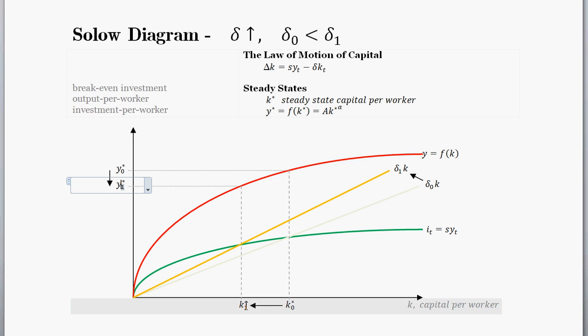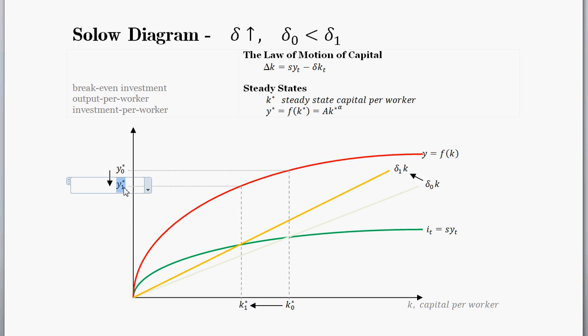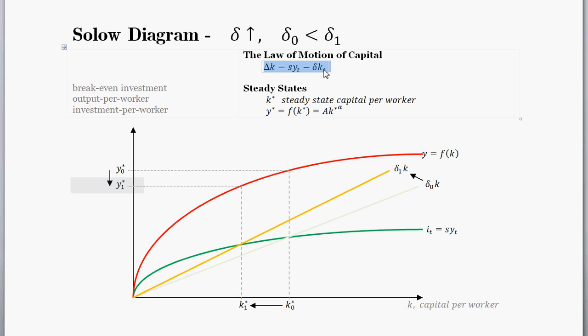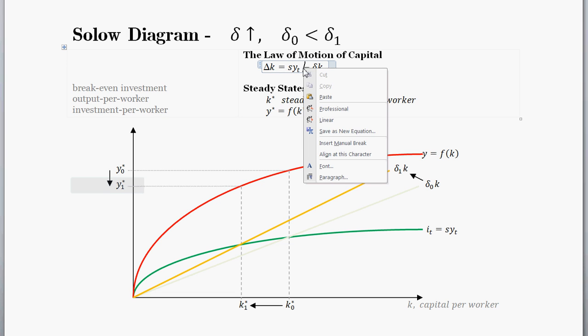At this new steady state value of capital per worker, we have a lower level of output, y* sub 1. We know that the steady state values of capital per worker and output per worker have decreased. Now the next question is how do things evolve through time? We know that capital evolves through a dynamic process. Even though the steady state values might instantaneously change, the actual values of capital take time to change because capital is ruled by this law of motion of capital — the capital accumulation equation — that can only change the stock of capital gradually.